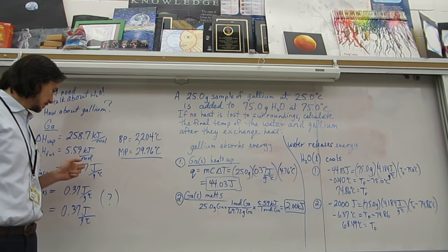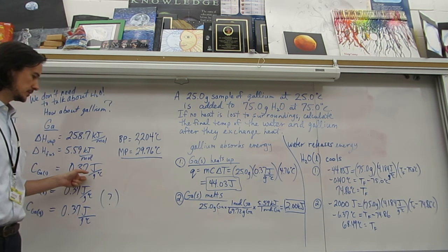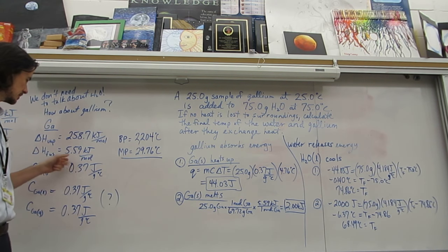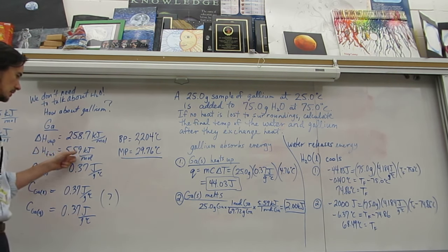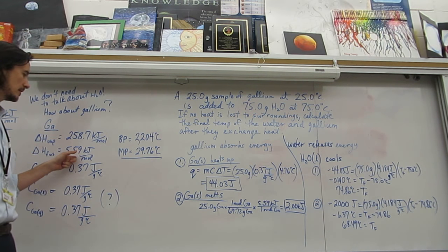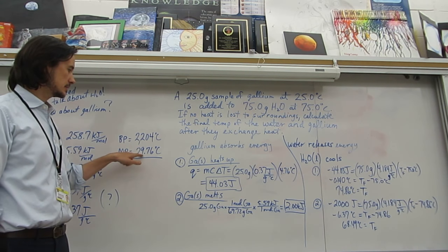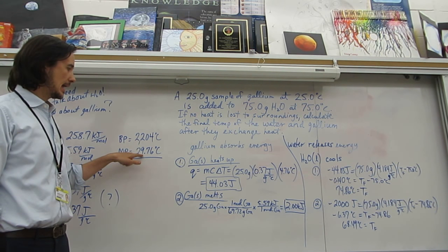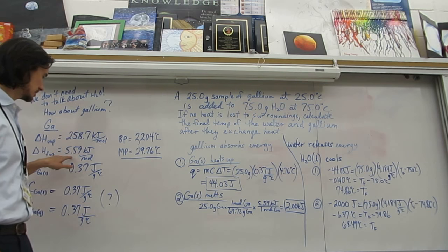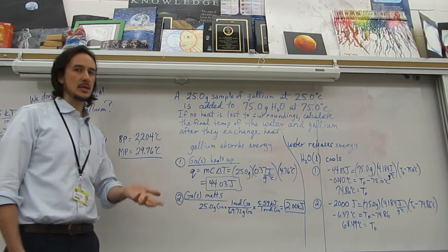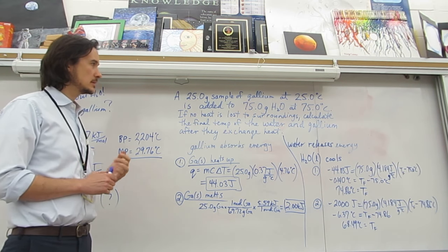I also have up here specific heat. I have just one specific heat value for gallium whatever the state of matter is, so 0.37 joules per gram degrees Celsius, and a heat of fusion of 5.59 kilojoules per mole. So the gallium is going to heat up to this temperature and then it's going to melt, and then we need this number, and then it's going to keep heating up.